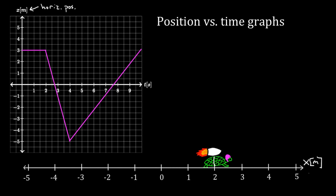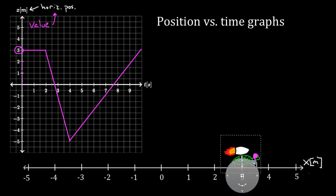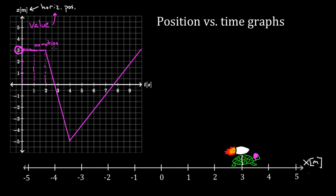Let's read this graph and figure out what this turtle did. We start at t equals zero: the value of the graph is three, and since the graph's value represents horizontal position, the turtle is at three meters at t equals zero. At t equals one second, reading the graph, the turtle is still at three. At two seconds, still at three meters. A horizontal line on a position graph represents no motion whatsoever — for the first two seconds, this turtle was just sitting there. She was probably trying to figure out how to turn on her jet pack.